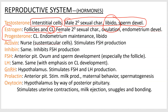Estrogen promotes female sexual characteristics like breast development and bone structure, helps with ovulation, and also drives development of the endometrium — it gets thicker with exposure to estrogen. Progesterone is released after ovulation. At that point we want to maintain the endometrium, and also this is why female sexual interest often increases after ovulation.